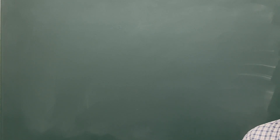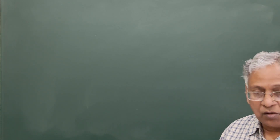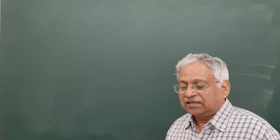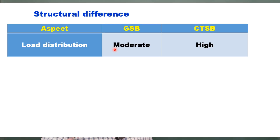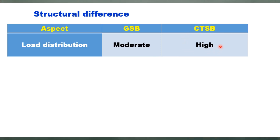In terms of material, CTSB is better or superior to GSB. The second comparison is structural difference. In the case of GSB, load distribution is moderate — it does not disperse the load over a large area, and therefore the stresses on the subgrade are high compared to CTSB. A CTSB layer is more effective at load distribution because cement stabilization creates a stiff structure that spreads the load over a much larger area.